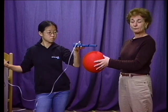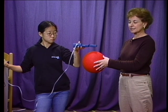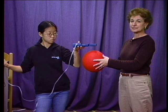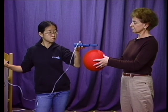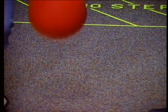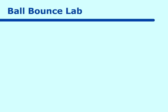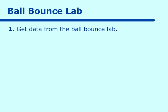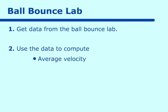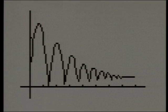We are going to drop this ball and what we'll eventually see is the graph of the data of the ball bounce. So ready, set, go. We are now going to take some data from the ball bounce lab and use that for our average velocity and our instantaneous velocity. This is what our ball bounce lab looks like. I'm going to zoom in on one of these parabolas and work with just one of the parabolas to get average and instantaneous velocity.